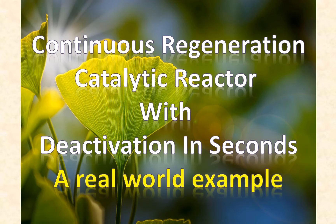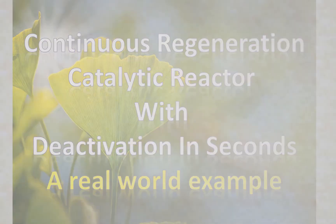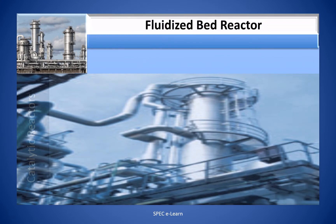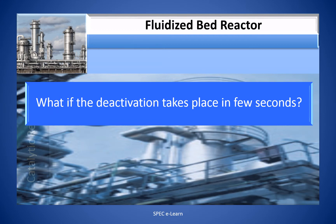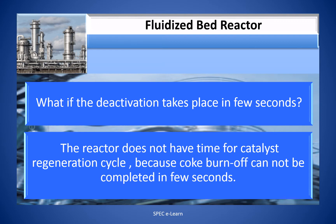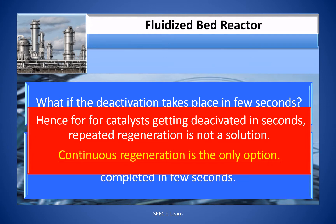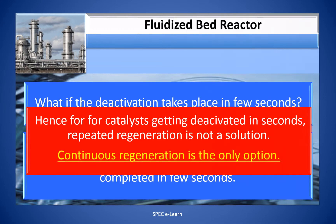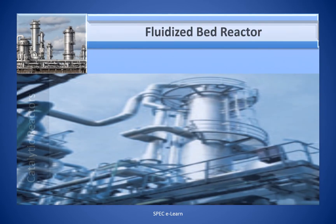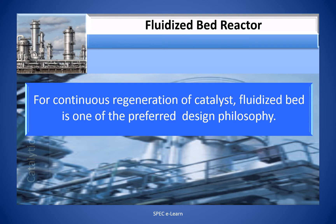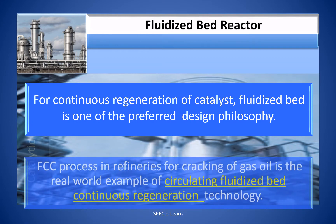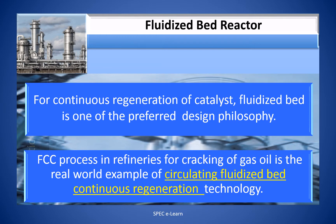The continuous regeneration catalytic reactor — a real world example: continuous regeneration with deactivation in seconds. What if the deactivation takes place in a few seconds? The reactor does not have time for a catalyst regeneration cycle because the full cycle cannot be completed in a few seconds. Hence, for catalysts getting deactivated in seconds, repeated regeneration is not a solution; continuous regeneration is the only option. For continuous regeneration, the fluidized bed is one of the preferred design philosophies. FCC processes in refineries for cracking of gas oil are a real-world example of circulating fluidized bed continuous regeneration technology.